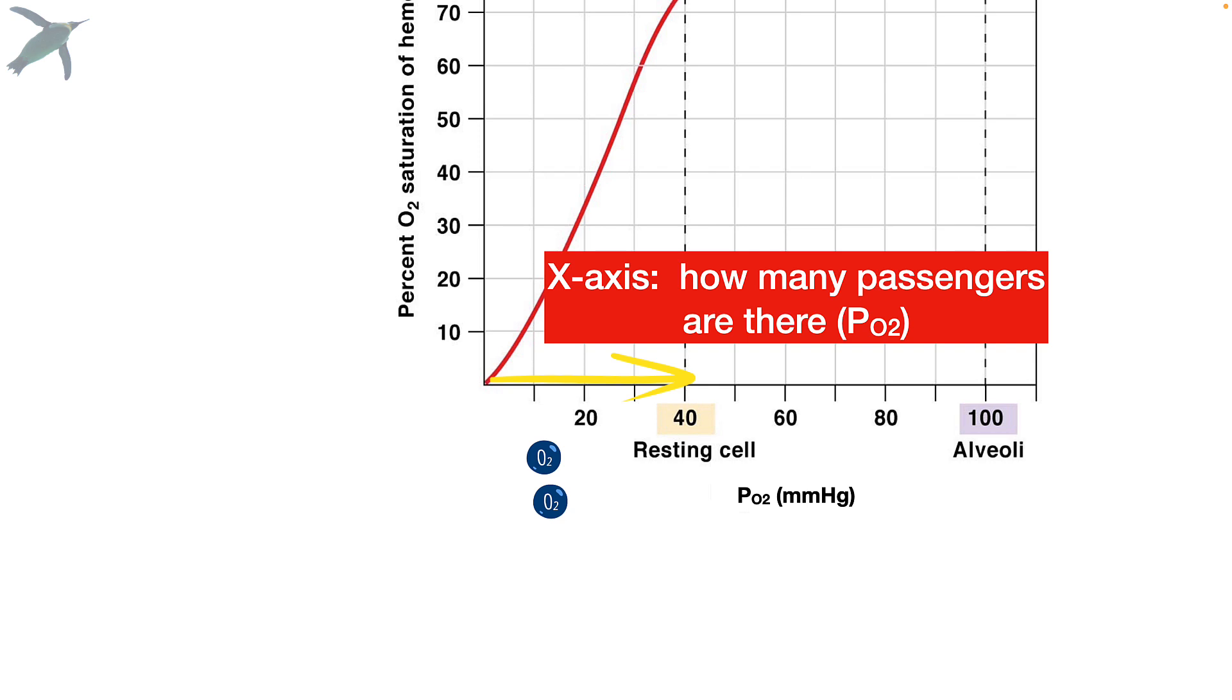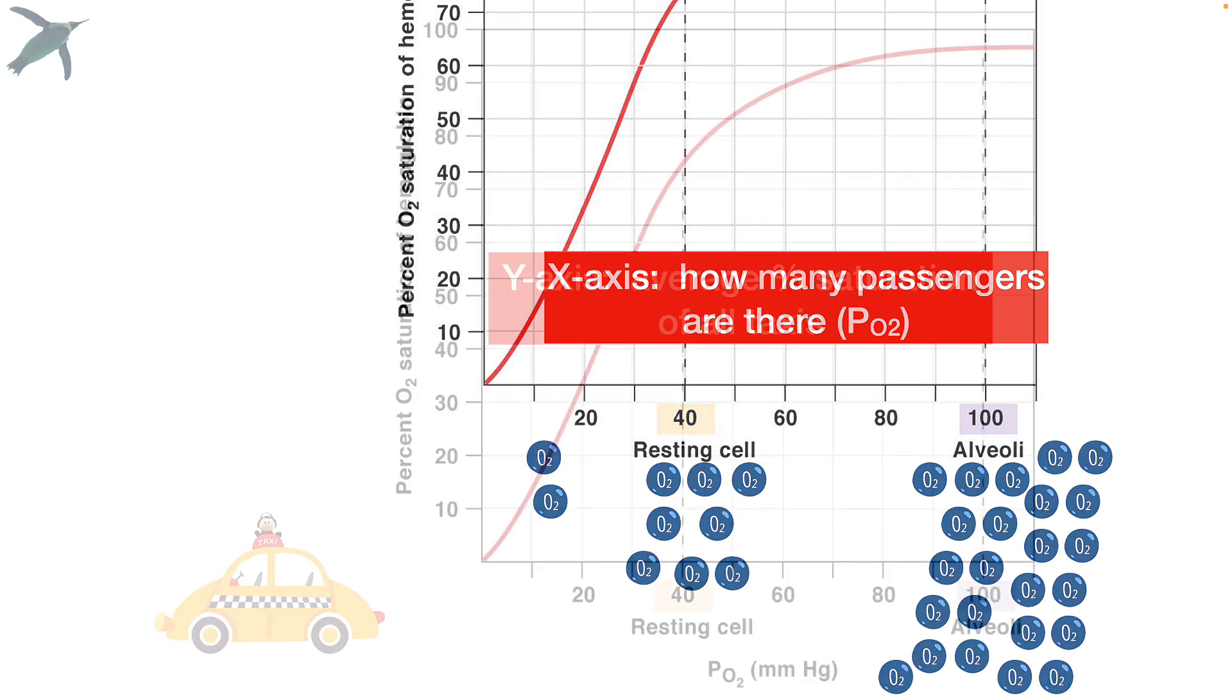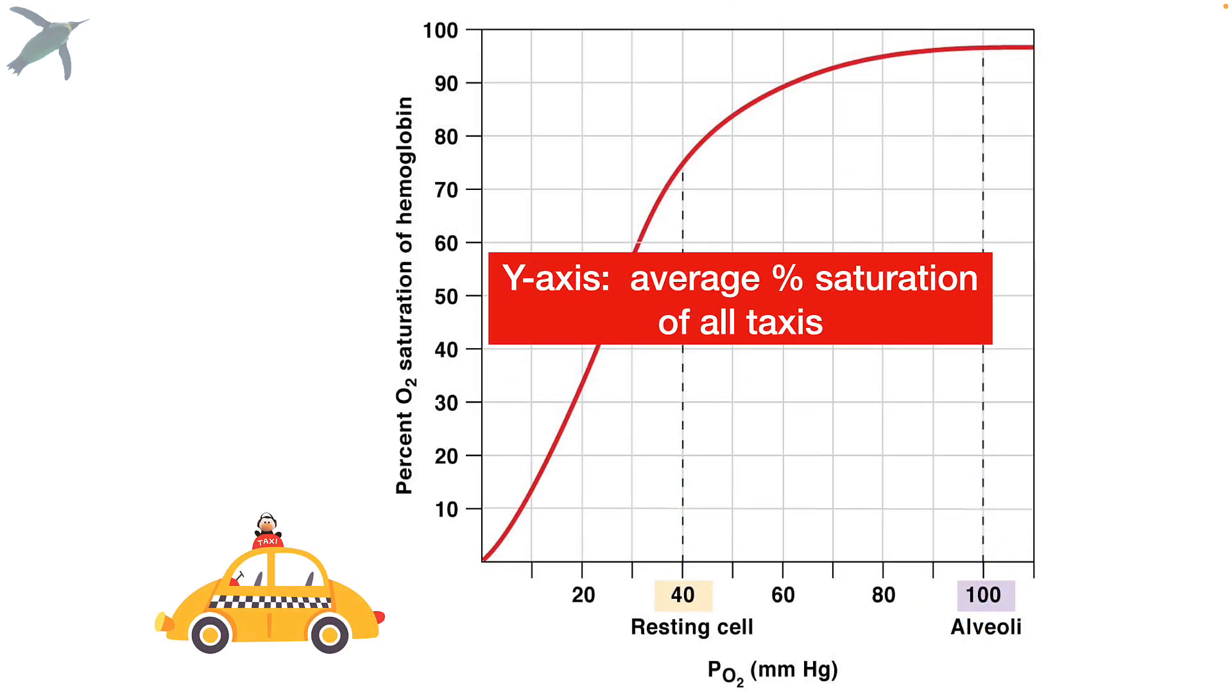So it goes from zero, and then we increase the amount of oxygen. A typical resting cell will have a PO2 of about 40 millimeters of mercury. And in the alveoli, you're looking at closer to 100 millimeters of mercury. So the x is how many passengers there are. The y-axis is the average percent saturation of all the taxis. So at the origin, we have zero percent saturation. That means all the taxis are completely empty. And up here at the very top, we have 100%. That means all the taxis are completely full of oxygen.